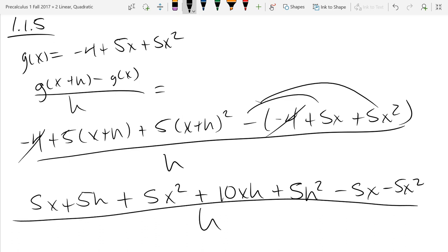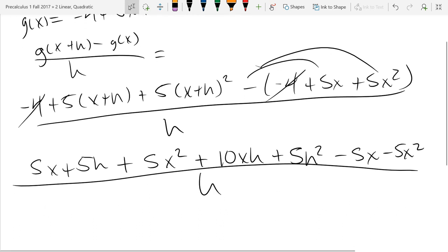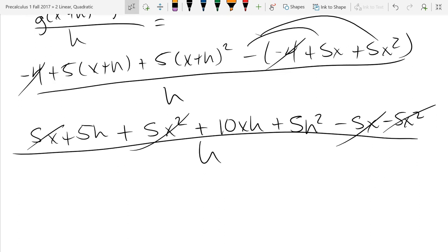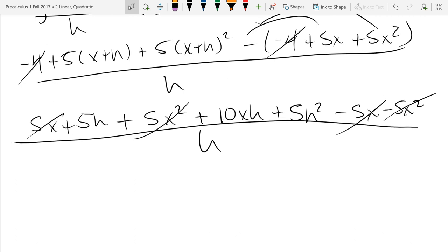Now, hopefully a lot of things are going to cancel on this line. I see minus 5x plus 5x, 5x squared minus 5x squared. Everything that doesn't cancel better have an h in it, because I'm going to end up factoring the h out to cancel in the denominator. So things without h's better cancel out here. So I'm left with 5h plus 10xh plus 5h squared, all divided by h.